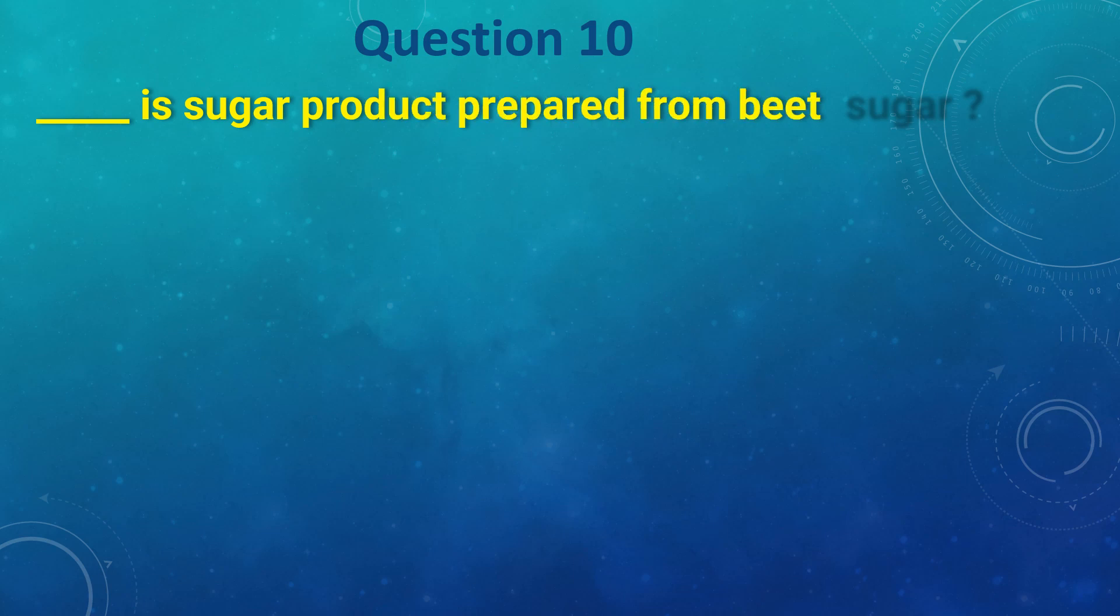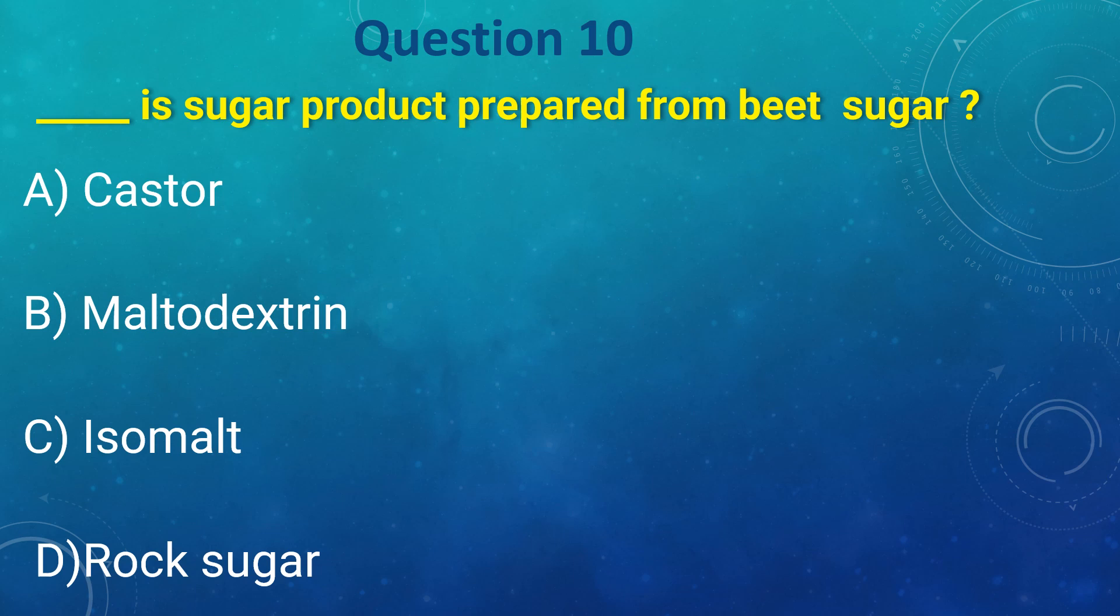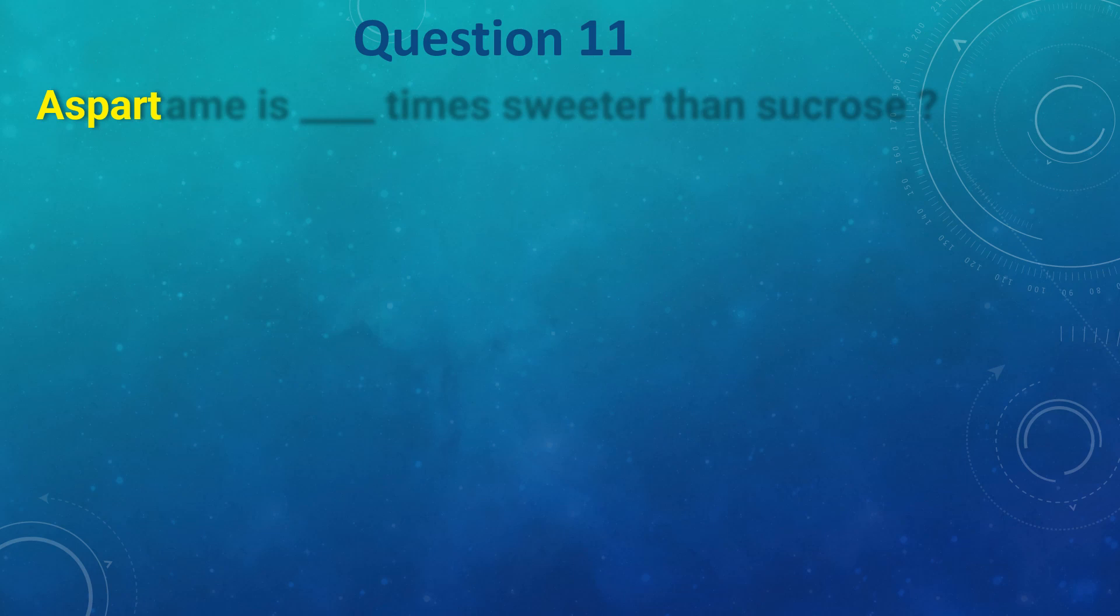beet sugar: a) caster, b) maltodextrin, c) isomalt, d) rock sugar. The answer is c) isomalt. Aspartame is _____ times sweeter than sucrose: a) 30, b) 50, c) 200, d) 300. The answer is c) 200.